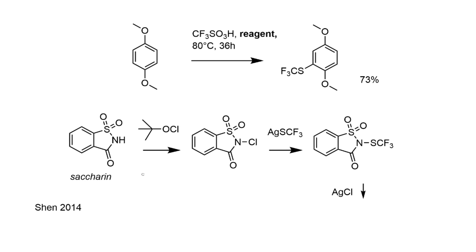A set of conditions I like even more was published in the same year by Shannon and co-workers using a saccharin-derived reagent: saccharin is reacted with tert-butyl hypochlorite to form an N-chlorinated intermediate, then with the silver salt to form another N-SCF3 reagent through precipitation of silver chloride. This simply serves as a source of electrophilic SCF3 groups and reacts with various nucleophiles without any additional metal catalysts, salts, or ligands. They simply took various activated arenes and heated them with triflic acid as activating reagent. The paper shows a 73% yield of trifluoromethylthiolated 1,4-dimethoxybenzene — exactly the building block needed to make the phenethylamine product. All that then remains is formylation and installation of the side chain.